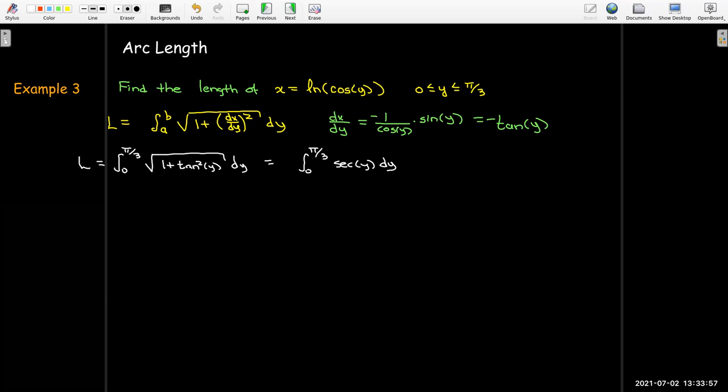So now I don't really need to be concerned about absolute value signs because I'm in the first quadrant and all of my trig functions are positive. So 1 plus tangent squared y is secant squared y. Radical secant squared y in the first quadrant is just secant of y and the antiderivative of secant of y is natural log absolute value of secant y plus tangent y. Just evaluate that between 0 and pi over 3.